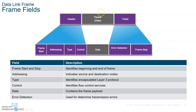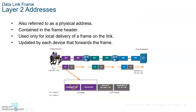Let's look at the Data Link frame. A packet comes from Layer 3, and at the Data Link Layer you add a header in front and a trailer behind it — this whole thing becomes a frame. This is what we mean when we say we encapsulate a packet into a frame. One of the key items in the header is the source MAC address and the destination MAC address — that's very important.